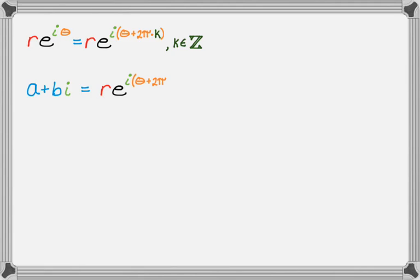So, what we do, r e to the i theta is actually, because of coterminal angles, equal to r e to the i times the quantity theta plus 2 pi k, where k is an element of the integers. And that's just theta plus 2 pi k is always coterminal to theta. So those have the same rectangular form representation. So knowing this, I can say that a plus bi is equal to r e to the i times theta plus 2 pi times k, and raise both sides of this to the 1 over n power.